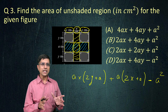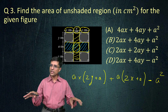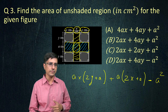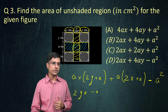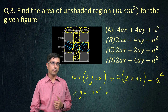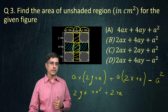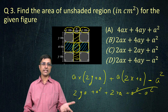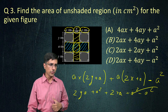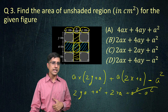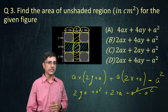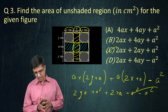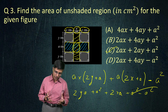Notice this time we do not have any complicated multiplications. This comes out to be 2ya plus a squared, plus 2xa plus a squared, minus a squared. The two a squared terms cancel, leaving us with 2ya plus 2xa plus a squared. That makes choice C the correct answer.